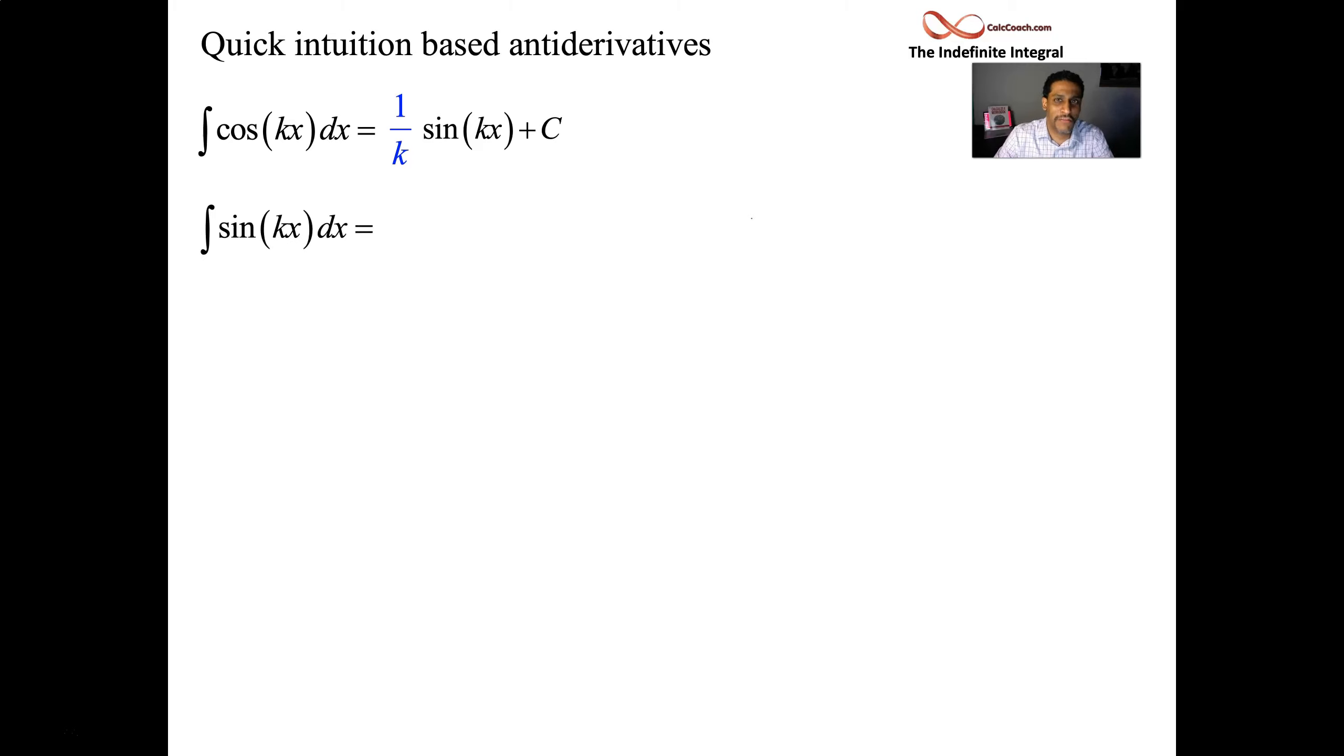How about sine of kx? It should be cosine of kx, negative cosine of kx, but we need that 1 over k factor. You can check it out. The derivative of the right-hand side should be the left-hand side, what's inside the integral. e to the kx gives 1 over k times e to the kx.